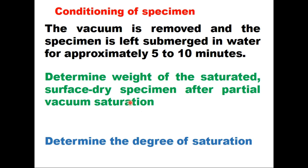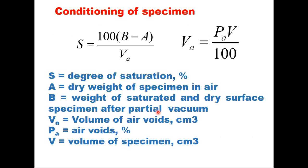The vacuum is removed and the specimen is left submerged in water for approximately 5 to 10 minutes. Then determine the weight of the saturated surface dry specimen after partial vacuum saturation. When the vacuum is applied, water enters into the voids and saturates the sample. The degree of saturation is determined by the equation: 100 × (B − A) / VA, where VA = PA × V / 100. B is the weight of the saturated surface dry specimen after partial vacuum, A is the dry weight of the specimen in air, VA is the volume of air voids in cubic centimeters, PA is the air void percentage, and V is the volume of the specimen.